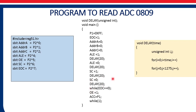Once the conversion is completed, it will raise EOC. We keep checking EOC with the statement: while (EOC == 0); — meaning if it is equal to 0, do nothing. It will keep looping in the same instruction until EOC is equal to 0. When EOC equals 1, it means conversion is complete and it will come out of the loop.